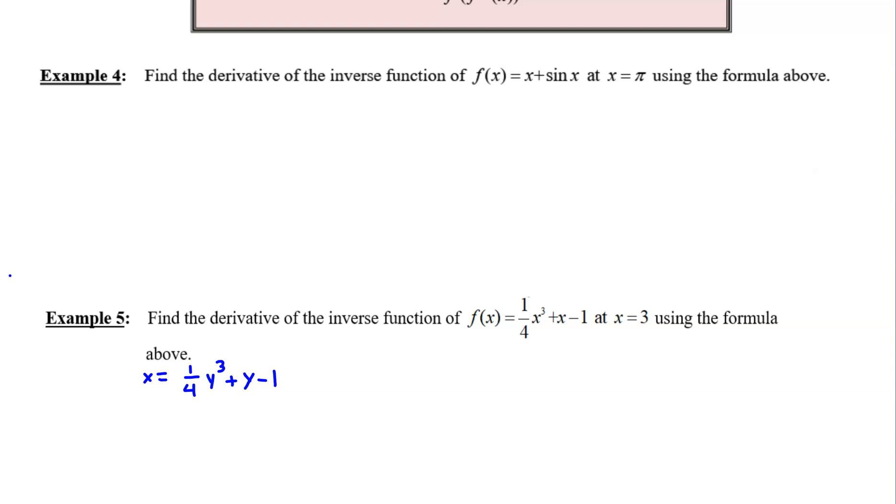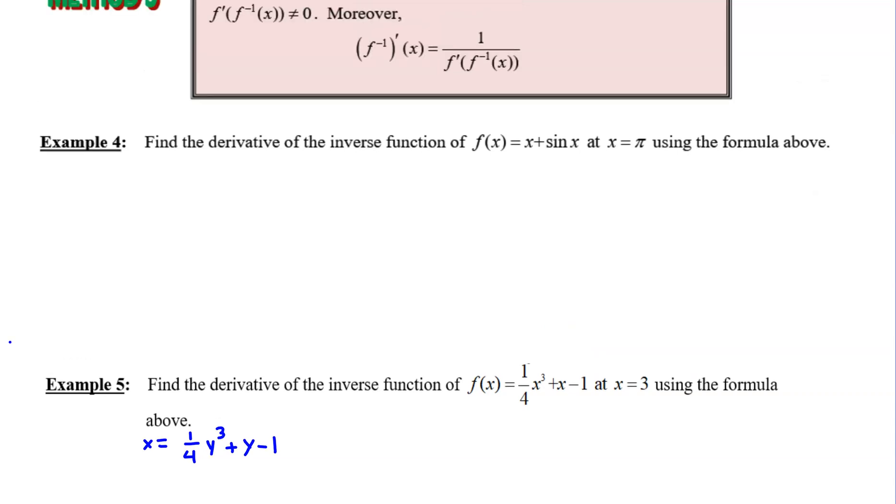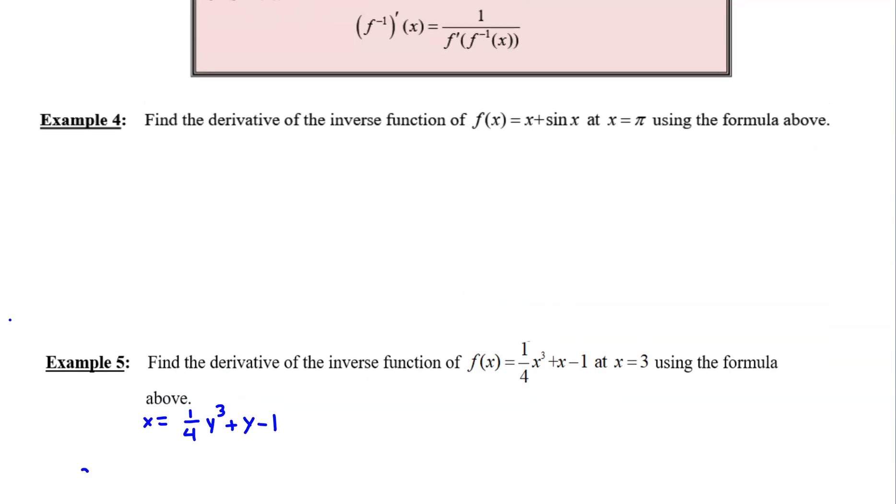So what we can do is we could actually set up that formula first of all. So in other words we're going to revisit this guy, f inverse prime of x, so what we could do is just physically get the ball rolling and write that f inverse prime of our x would be 1 over and then for the derivative of that function f.